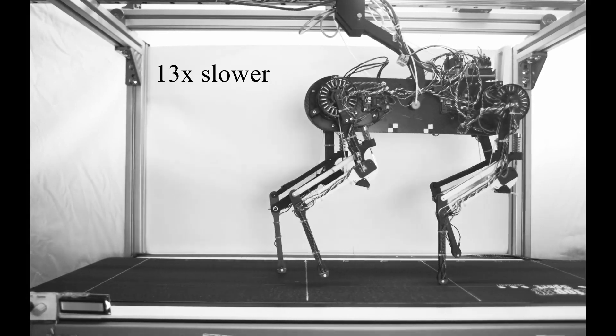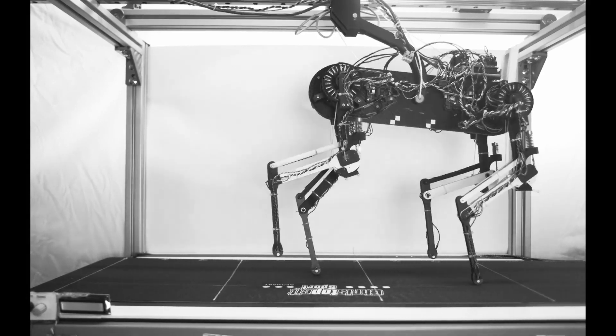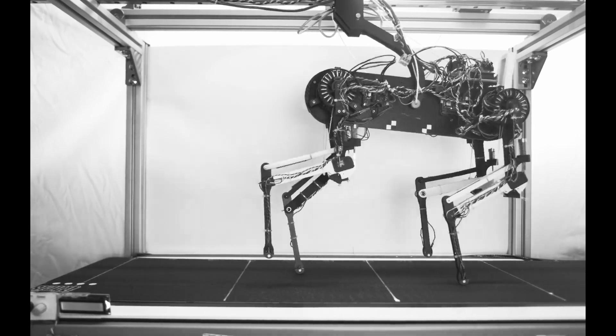Within one hour, the robot goes from stumbling like a newborn animal to energy-efficient walking without stumbling.